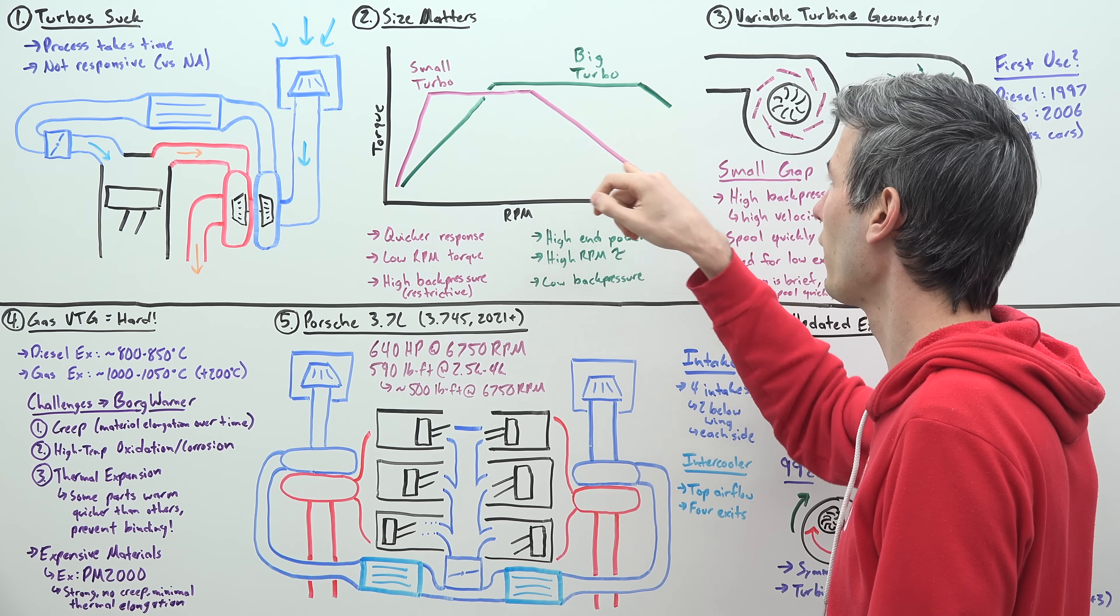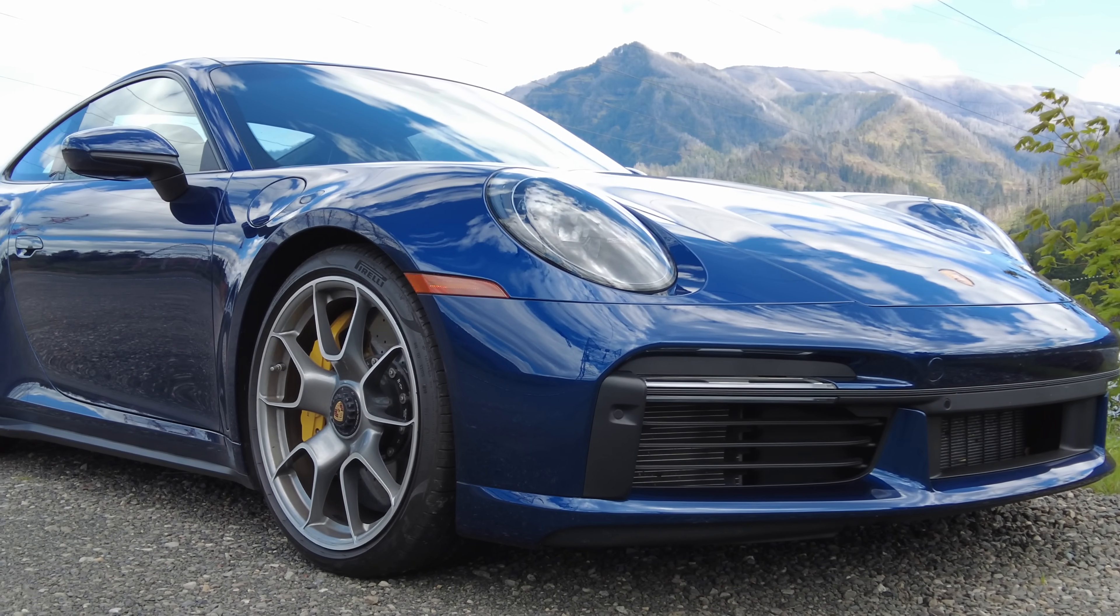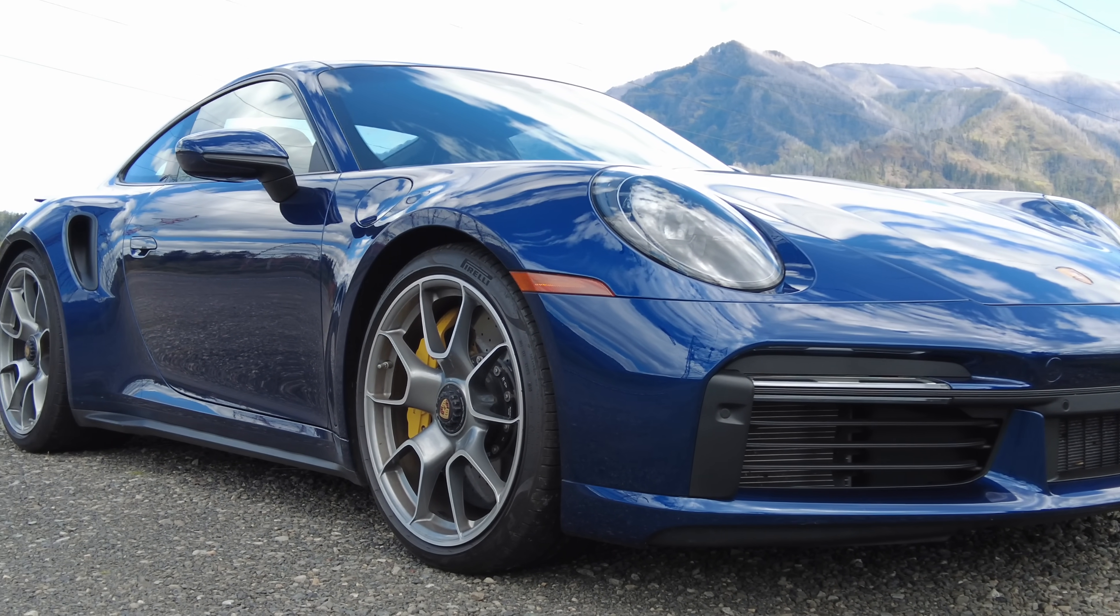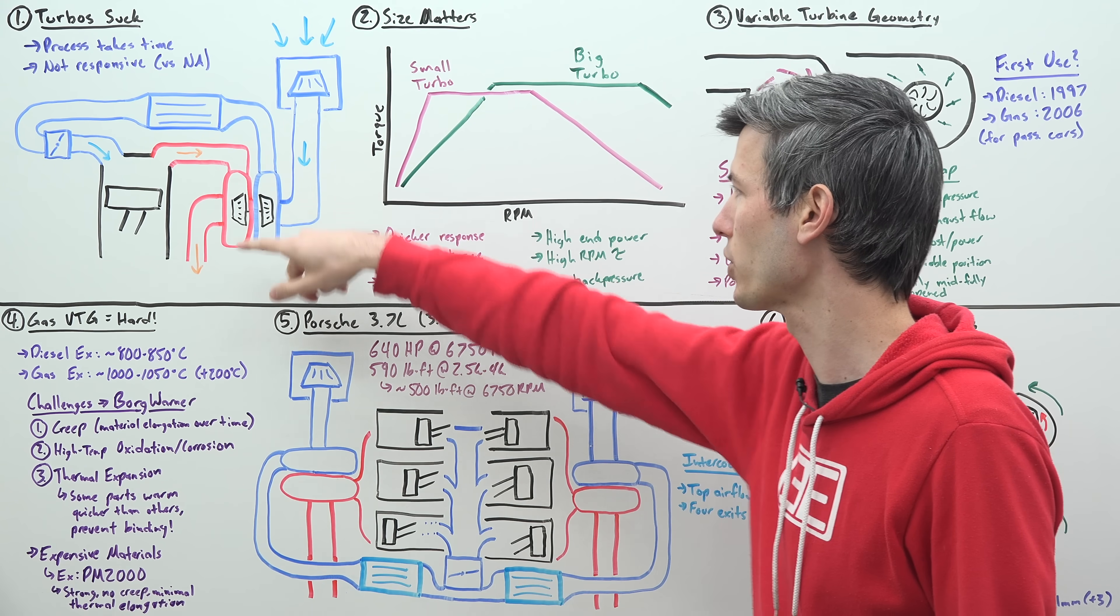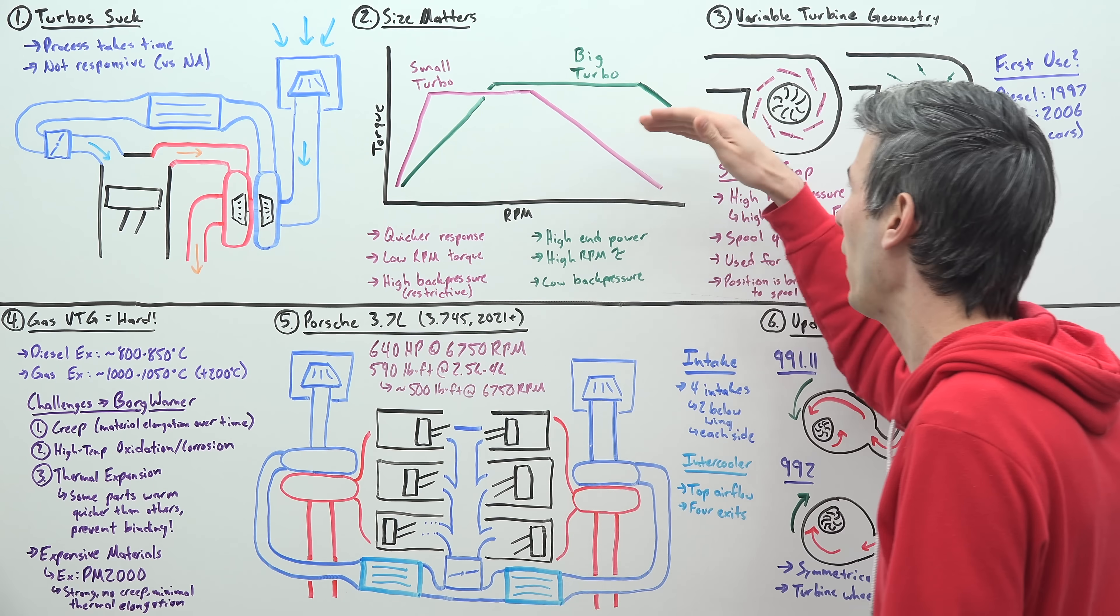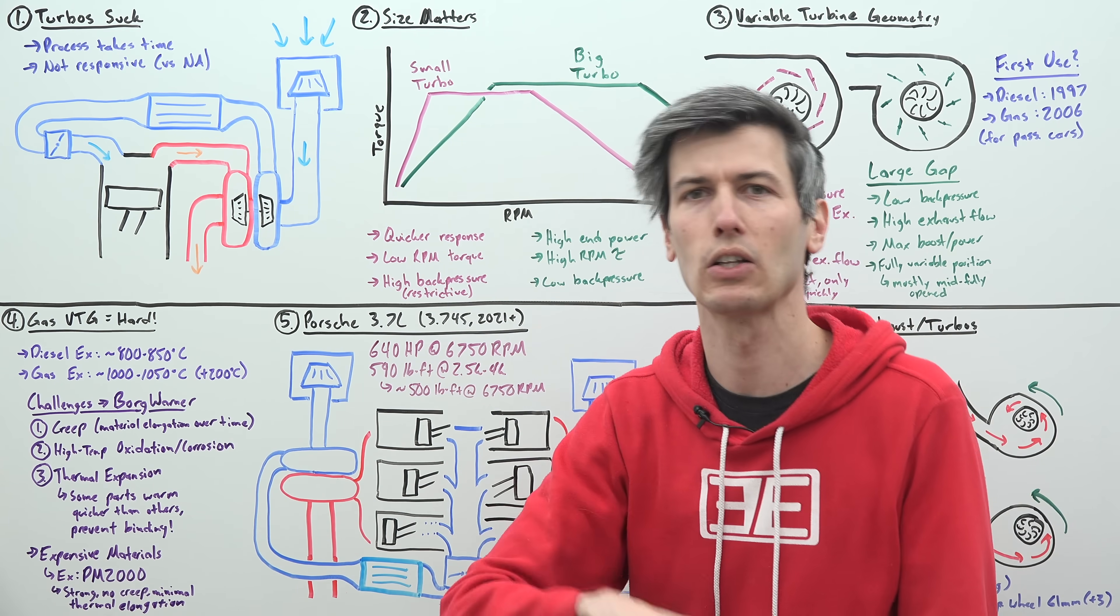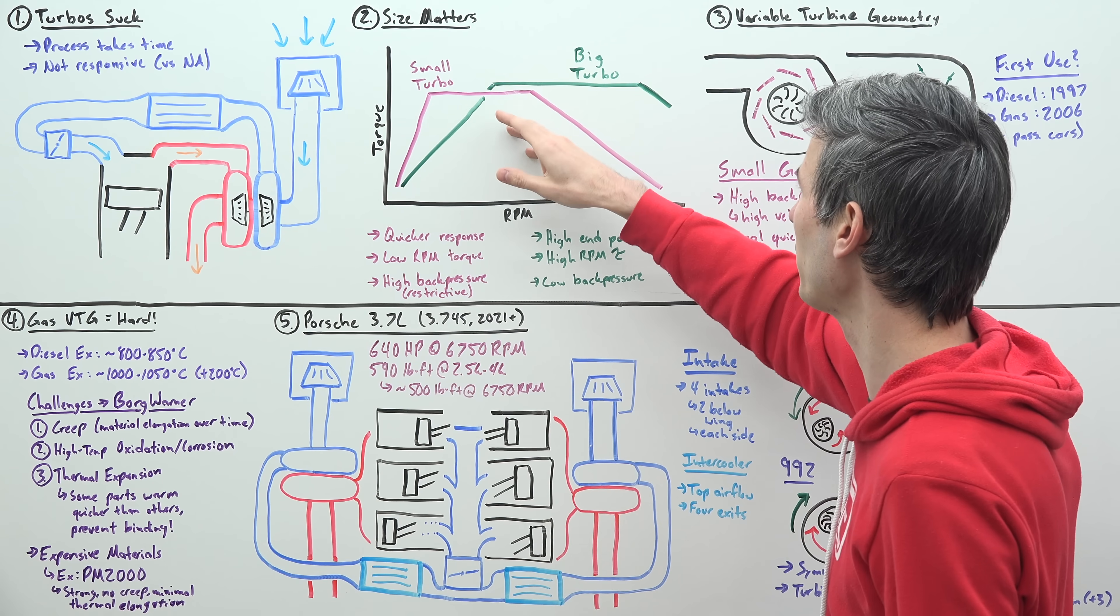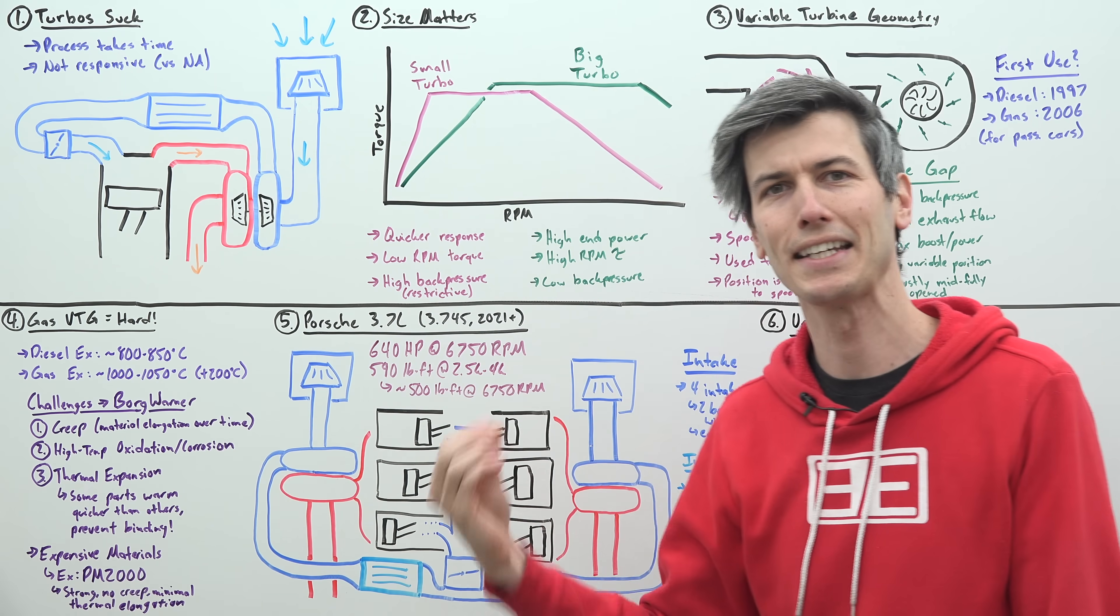For a high RPM application where you want big power, you might choose to use a big turbocharger which doesn't have as much restriction, so you can flow a lot of exhaust through it. That gives you high power with low back pressure, but it means that turbocharger is going to take a long time to spool up and may not spool up until higher RPMs.